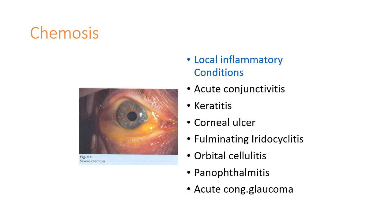Causes of chemosis include local inflammatory conditions such as acute conjunctivitis, keratitis, corneal ulcer, fulminating iridocyclitis, orbital cellulitis, panophthalmitis, and acute congestive glaucoma. Orbital cellulitis and panophthalmitis are dreaded conditions.